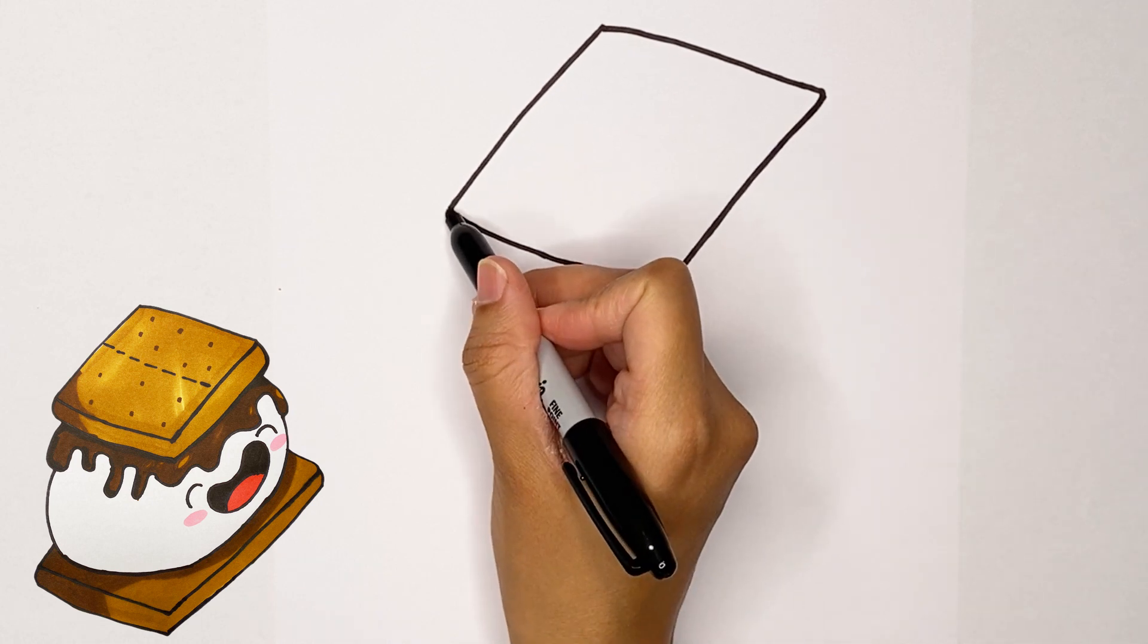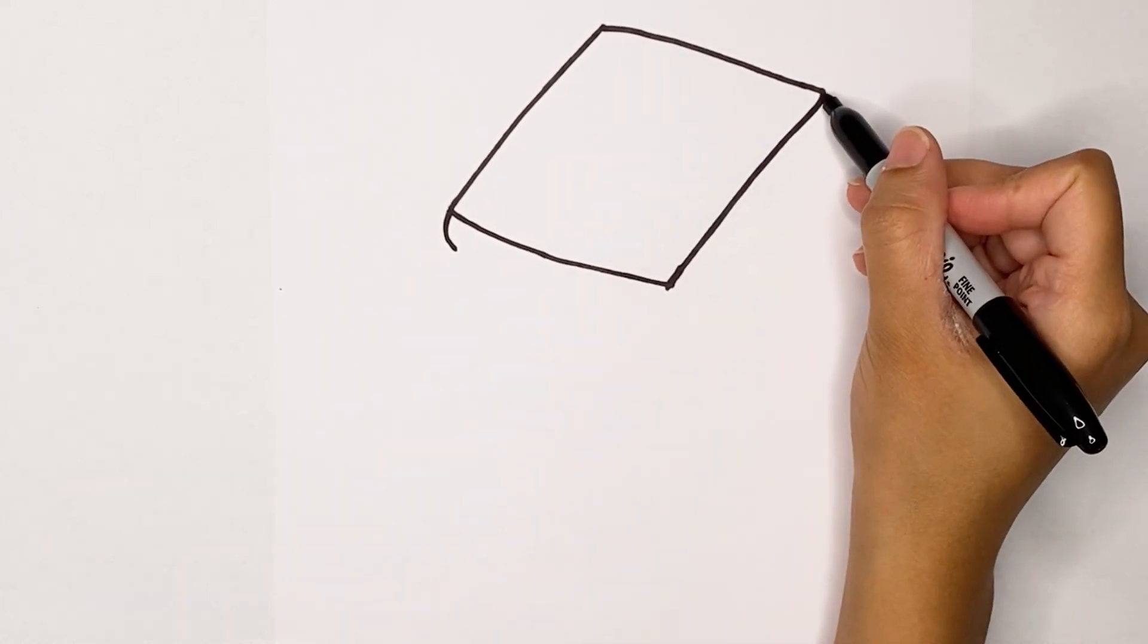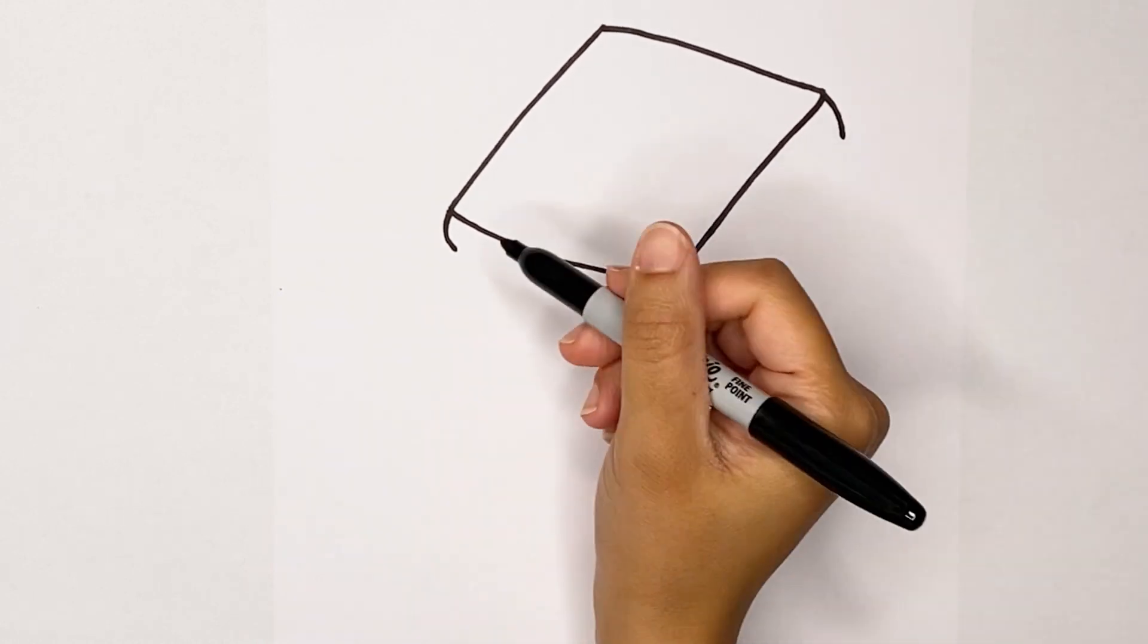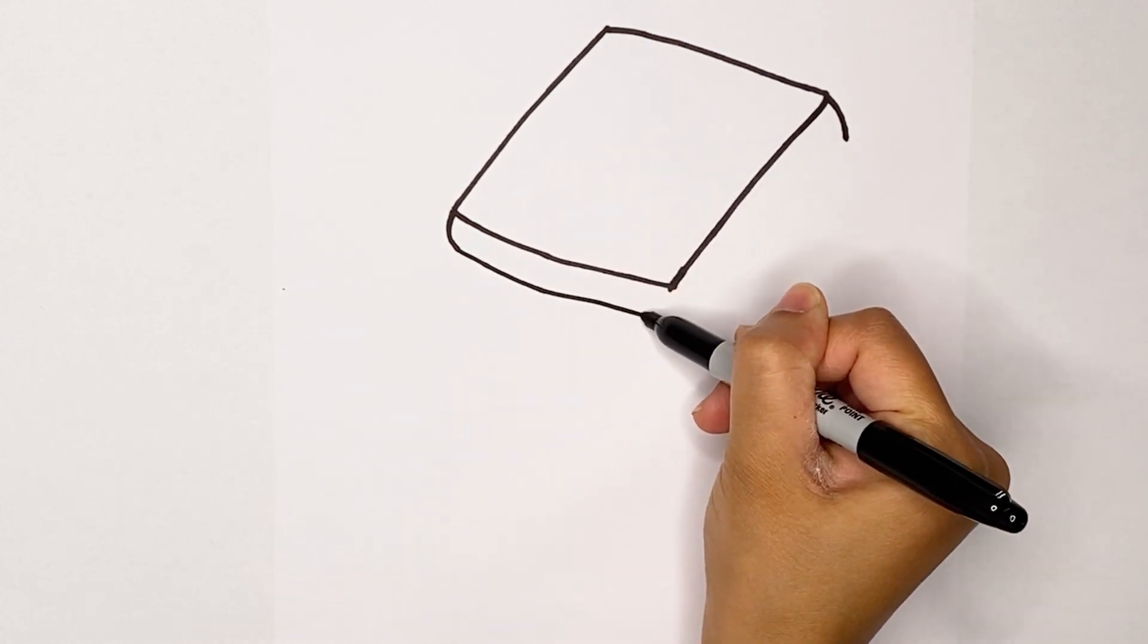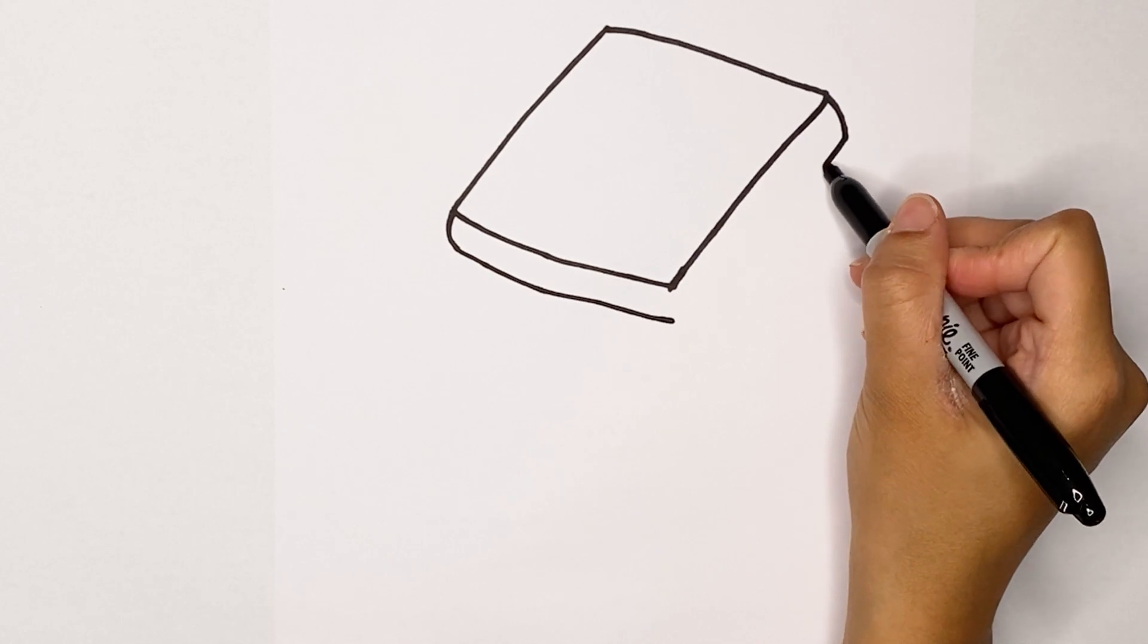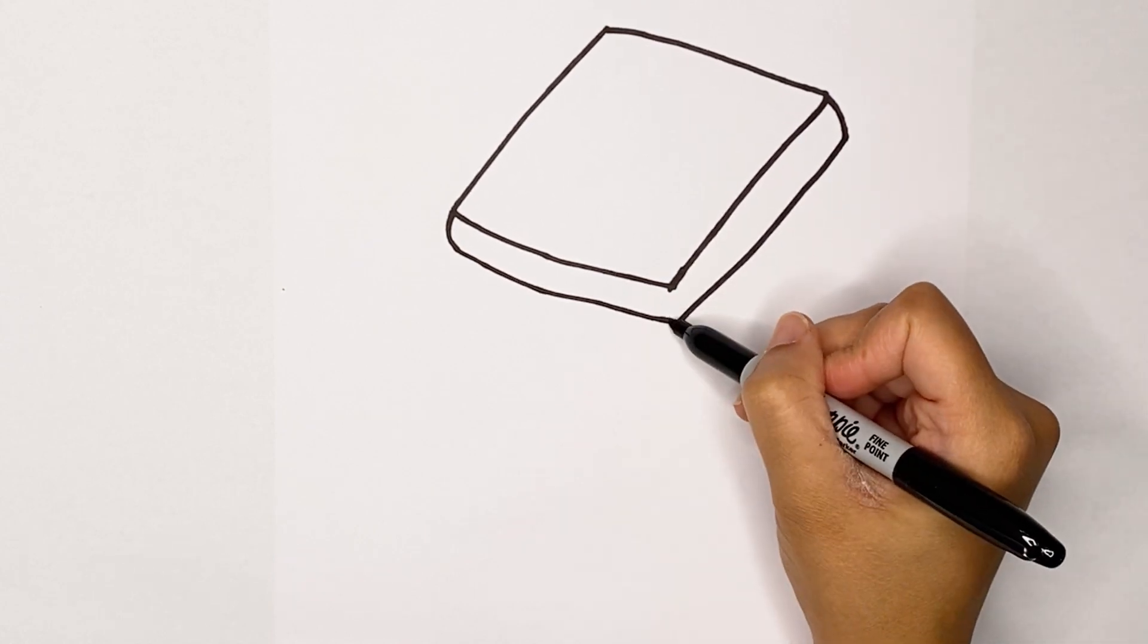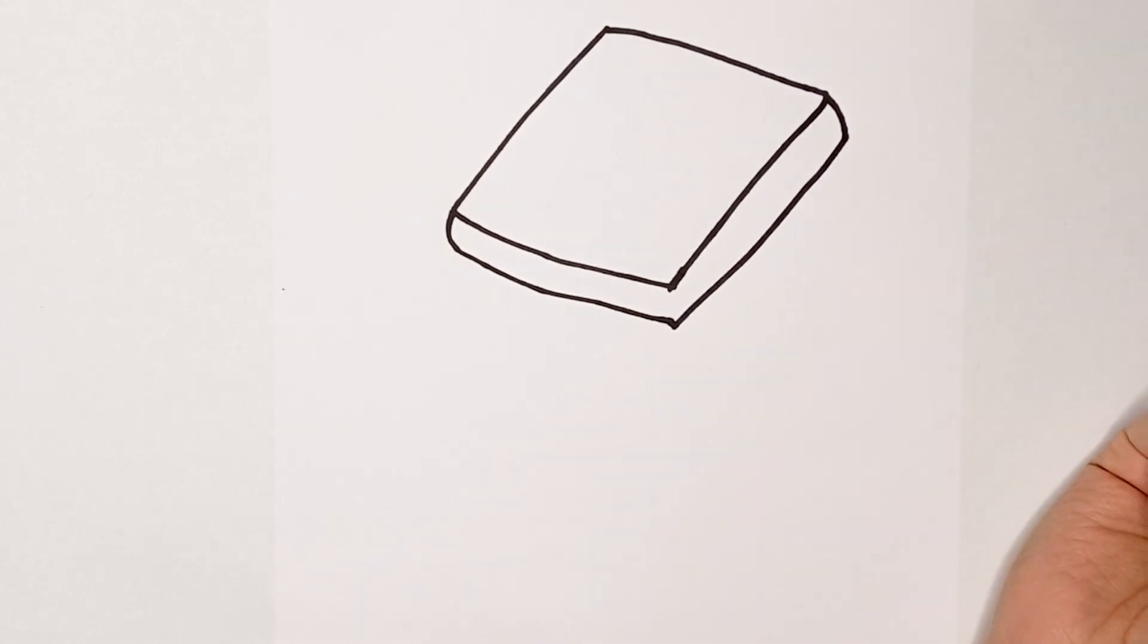Now let's draw a curve out and a curve out on this side as well, and then we're going to go around our diamond shape and stop about here. Same thing, go out and then try to connect those lines as best you can. There we go. That's one graham cracker.